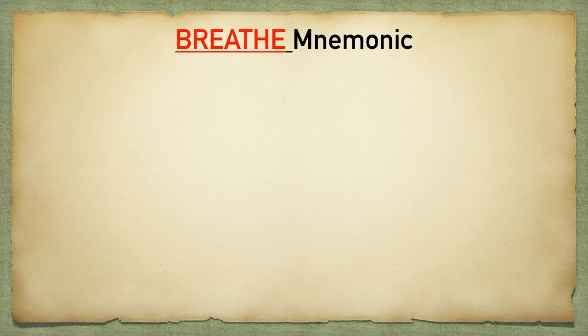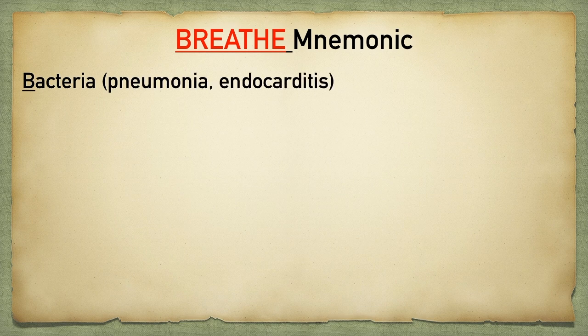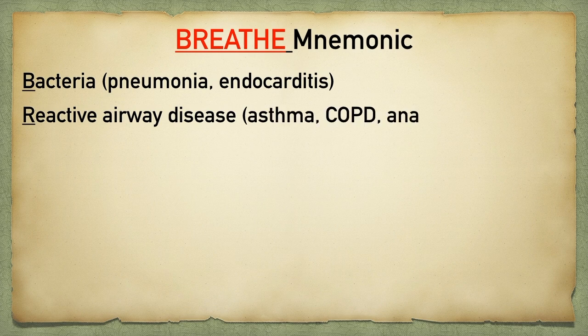Now it's time to get the history from the patient. Before discussing the history, it's important to go over the mnemonic. There are a lot of things that can cause shortness of breath, and while obtaining that history you'll want to elicit information that helps you prioritize that differential. The mnemonic is fittingly BREATHE, and it helps you remember the main intrathoracic causes of shortness of breath. B stands for Bacteria — this helps you remember pneumonia and endocarditis.